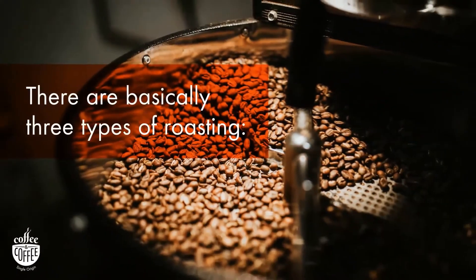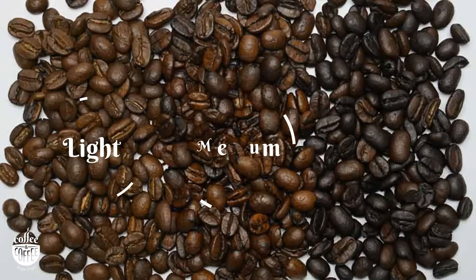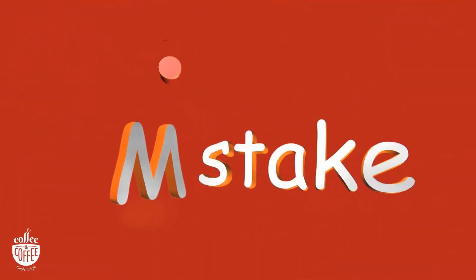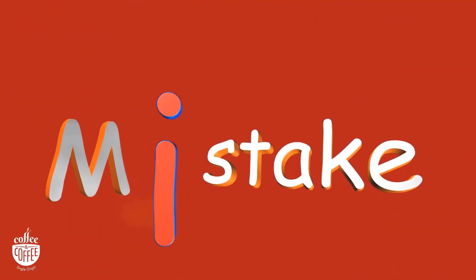There are basically three types of roasting: light, medium, and dark roast. There is a myth that darker roasted beans have more caffeine than lighter ones, but actually that is not true — they really almost have the same caffeine amount.